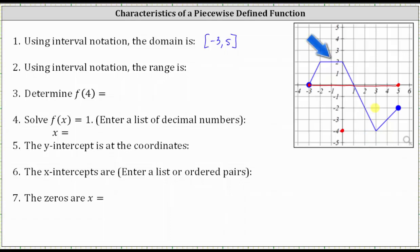The highest points on the graph are where y equals positive two, and there are no holes or breaks in the graph from y equals negative four to y equals positive two, and therefore the range is a closed interval from negative four to positive two, which we indicate as open square bracket, negative four, comma positive two, closed square bracket.